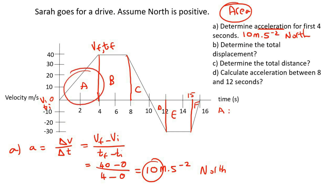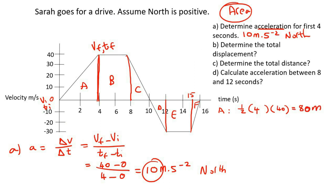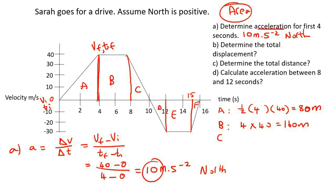For area A — a triangle — the area is half base times height: half times 4 times 40, which gives 80 meters. For area B — a rectangle — it's length times breadth: the length from 4 to 8 is 4, and the height is 40, so that's 160 meters. For area C — a triangle — it's half times base from 8 to 10, which is 2, times height of 40, giving 40 meters.